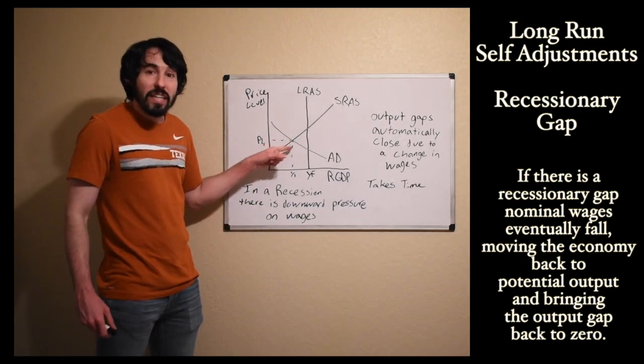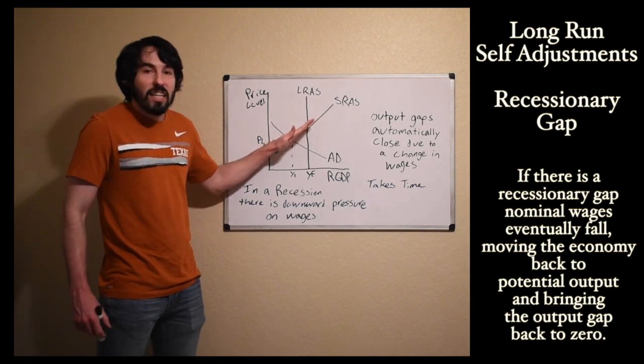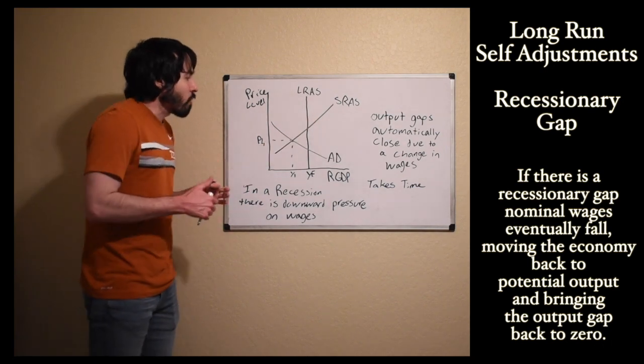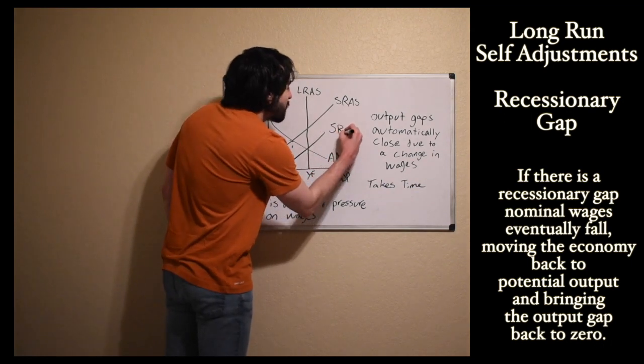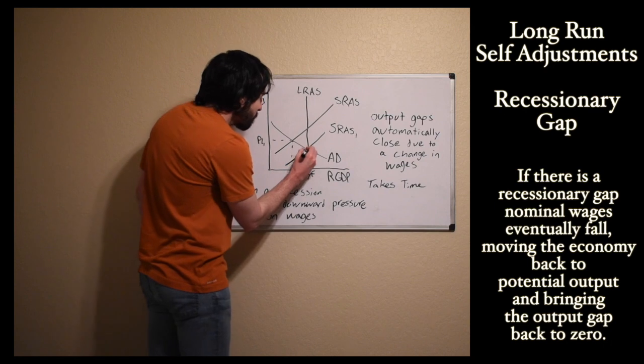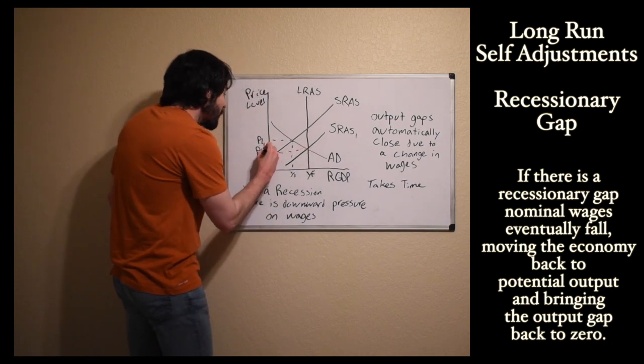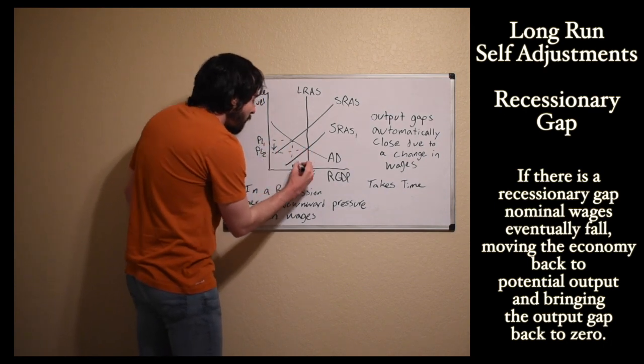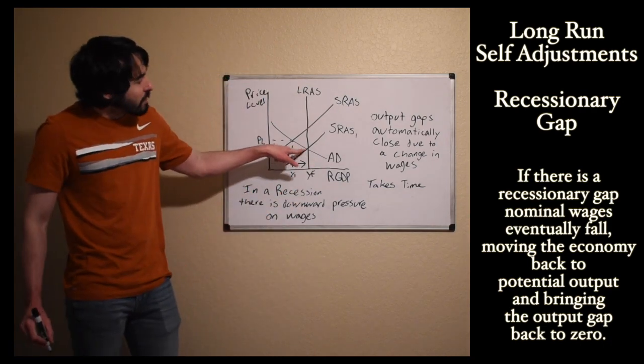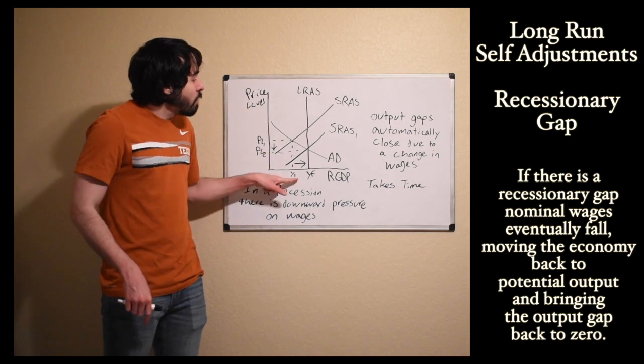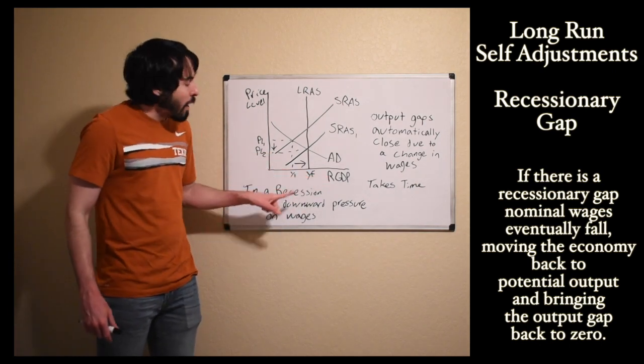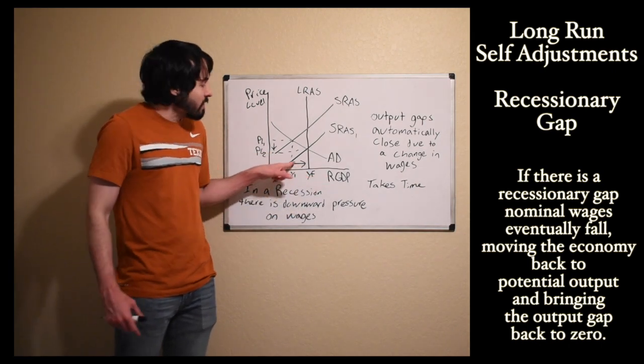As people begin to accept lower wages, our businesses are going to hire more people back. Short run aggregate supply will shift to the right. Once they can pay people less, businesses will hire more people. And we'll get back to long run equilibrium. Price level will come back down, so prices and wages decrease, so inflation is down, wages are down. But we get back to full employment output and our unemployment rate decreases as real GDP increases.